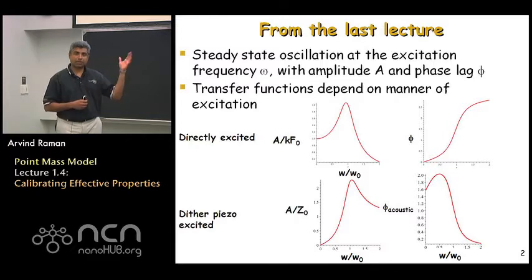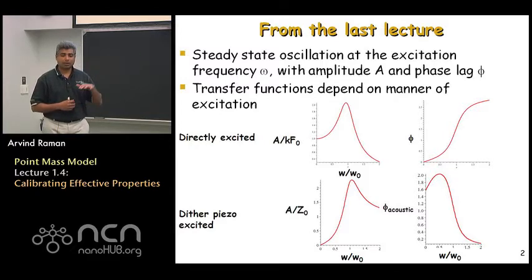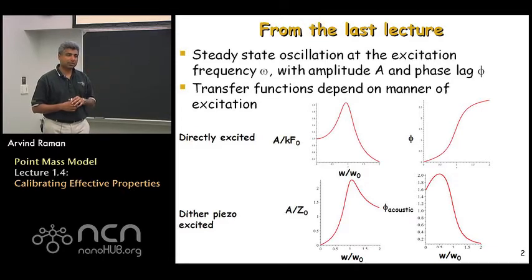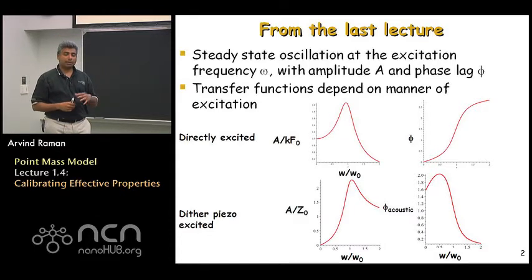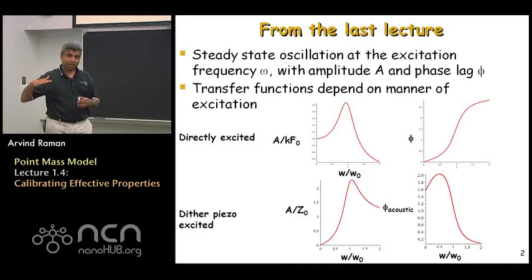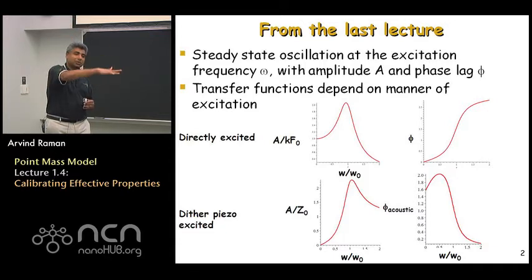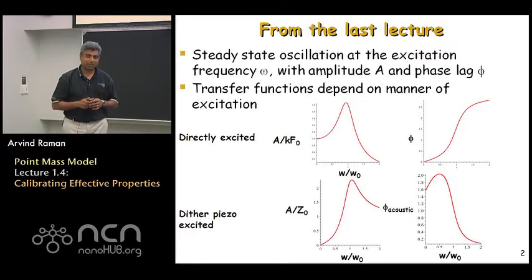For example, what I've shown up here from last time on the top row are the amplitude of the oscillator as a function of drive frequency and phase lag as a function of drive frequency for a magnetically excited case, where you see the classical amplitude increase at resonance and then dip. On the other hand, for the dither piezo setup it looks very different — the measured amplitude is very small at low frequencies, increases to a maximum value, and then goes down. Last time we talked about many important differences between these two cases.